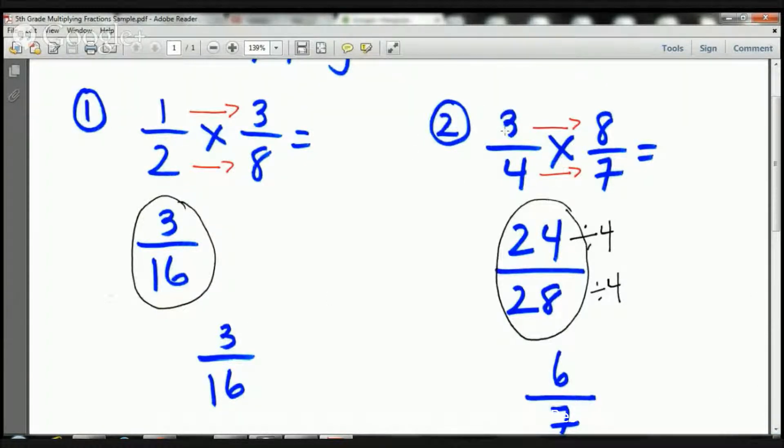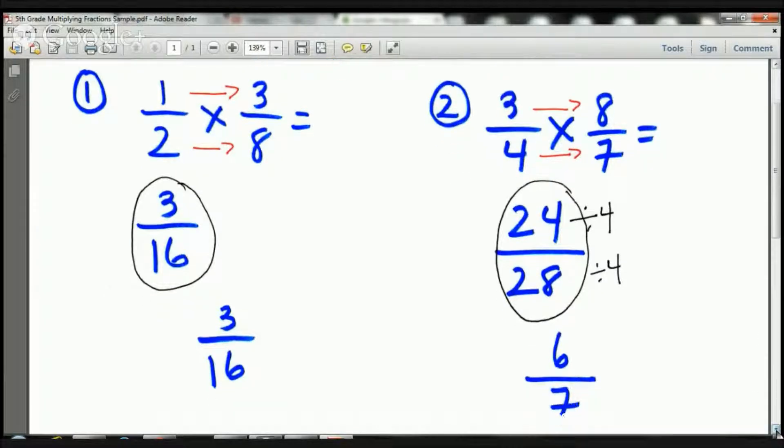Now let's take a look at our second example, or example number two. Here we have three-fourths times eight-sevenths. So what I do is I multiply straight across. Three times eight is twenty-four. Four times seven is twenty-eight. And now that I have twenty-four twenty-eighths, I have to decide if I can reduce this.